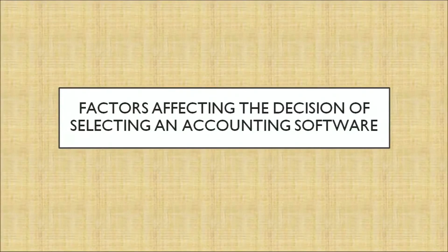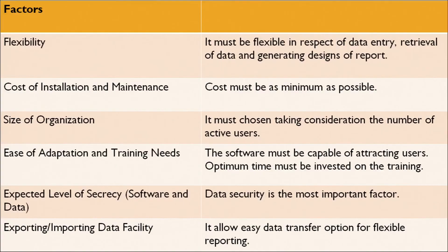What are the factors to consider when deciding what software is needed? Number one: it should be flexible. Second: cost of installation and maintenance. Third: size of the organization. Fourth: ease of adoption and training needs. Fifth: expected level of secrecy. Sixth: exporting and importing data facility. The software should be flexible so it can be customized as per user needs. Installation and maintenance should be less costly. Size of the organization impacts how costly the software implementation will be. Adoption and training needs must be taken care of, secrecy of data must be maintained, and exporting and importing data should be possible.